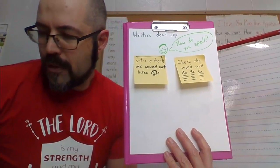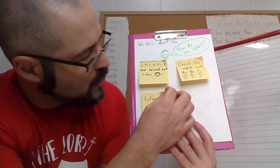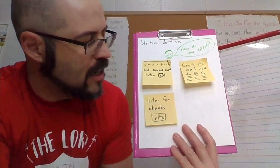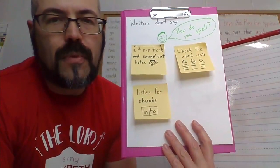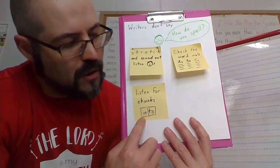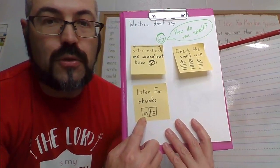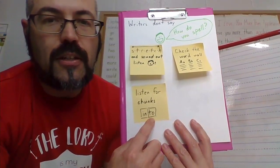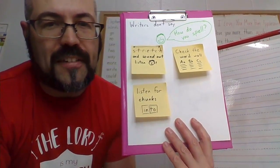Or, you can also listen for chunks and use our chunky monkey strategy all the time too. You can listen for chunks. Like the word into, it actually has two smaller words, in, to. That makes it easier.